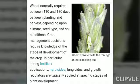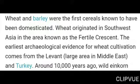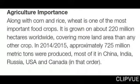Wheat and barley are the first cereals known to have been domesticated. Wheat originated in southwest Asia in an area known as the Fertile Crescent. The earliest archaeological evidence for wheat cultivation comes from the Levant, a large area of the Middle East and Turkey, around 10,000 years ago.